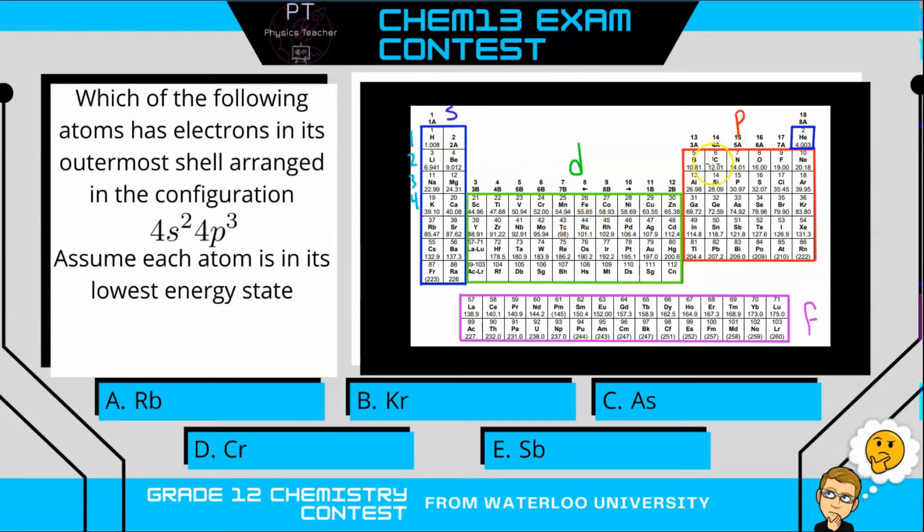Okay, what about something like carbon? Well, carbon, we would have the whole first period, so we would have 1S2, then the second shell, 2S2, and then we would have 2P, all the way up to 1, 2, so 2P2. So you can quickly determine it.